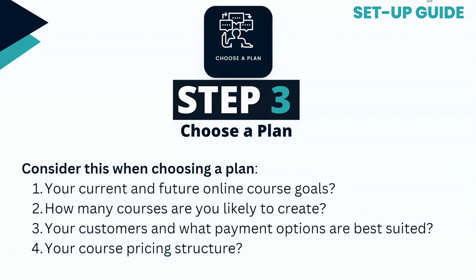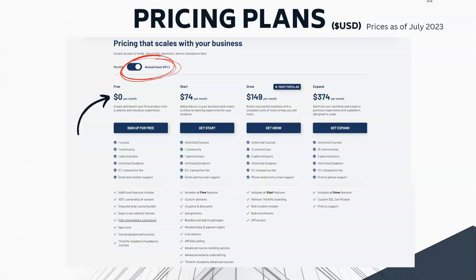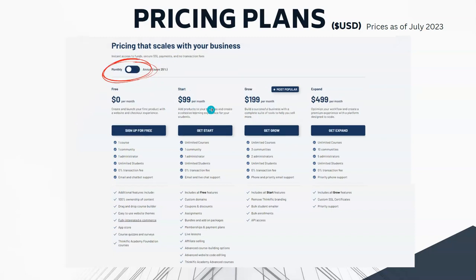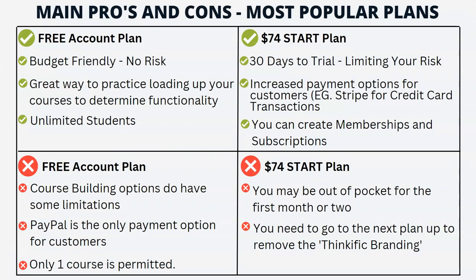Next is to choose your plan. There's a free plan you can start with, and then there's a basic plan and it steps up from there. Just make sure you know how many courses you need — the free plan only allows you one course. The Start plan allows unlimited students, unlimited courses, and zero transaction fees, and the Growth plan gives you even more features. The annual fee is $74 USD, or $149 for the Growth plan; if you pay monthly it's a bit more expensive. The free account will be budget-friendly but limited in what you can provide, and there are different course building limitations as well.